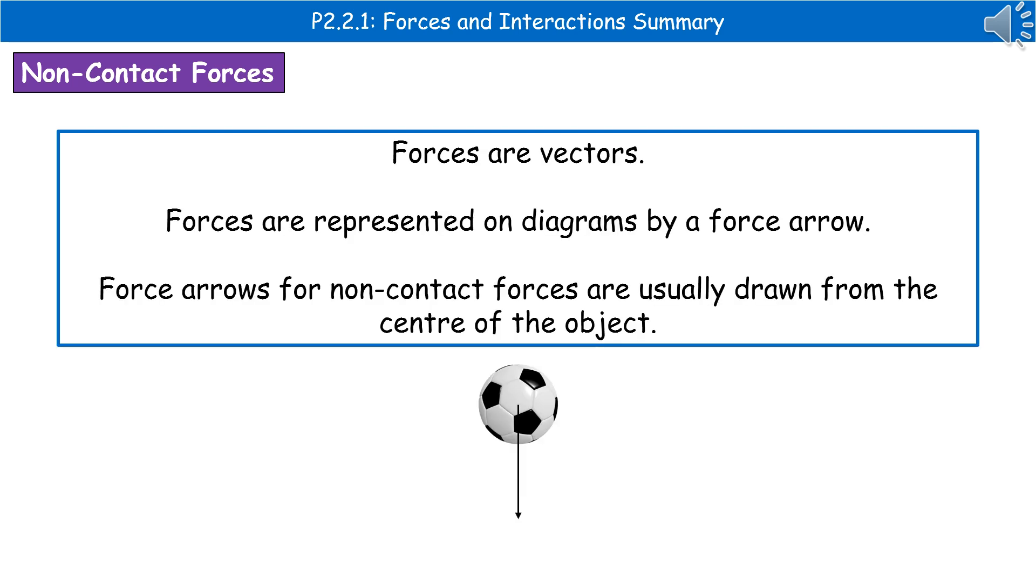When we're considering forces they're an example of a vector because they have not only a magnitude but also a direction. When we come to draw a force we will represent them on diagrams by a force arrow. The length of the arrow represents the size of the force and the direction of the arrow is the direction the force acts in.